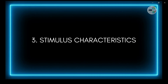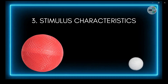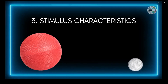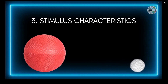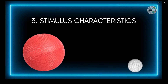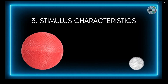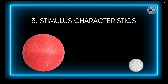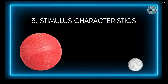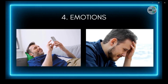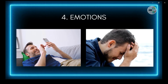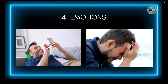Number three: stimulus characteristics. This refers to the things you are looking at, hearing, or feeling. The characteristics of those things — like their colors, shapes, and sizes — affect how you perceive them. For instance, a big bright red ball will catch your attention more than a small gray one.